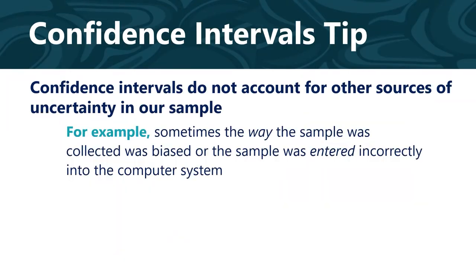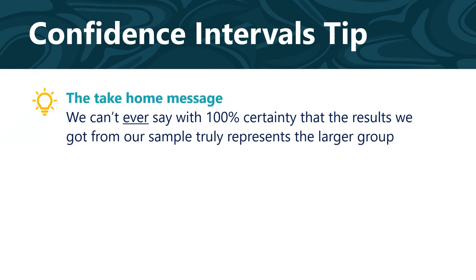Confidence intervals do not account for other sources of uncertainty in our sample data. For example, sometimes the way the sample was collected was biased, favoring one type of person over another, or sometimes the data collected was entered incorrectly into the computer system. So we can't ever say with 100% certainty that the results from our sample truly represent the larger group — but looking at confidence intervals and understanding the way data were collected can help.